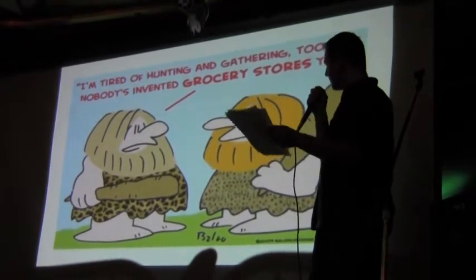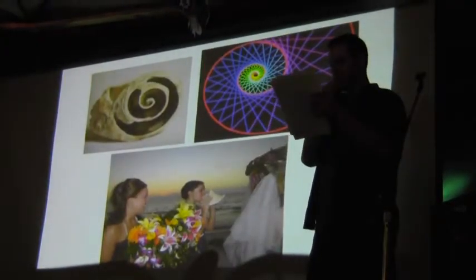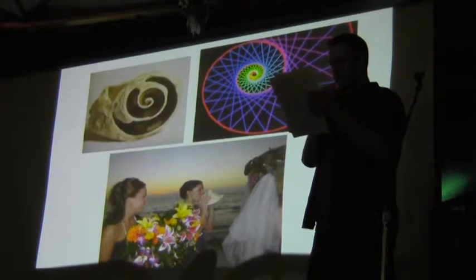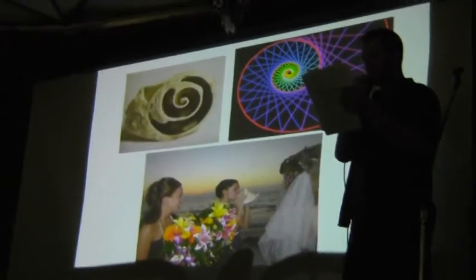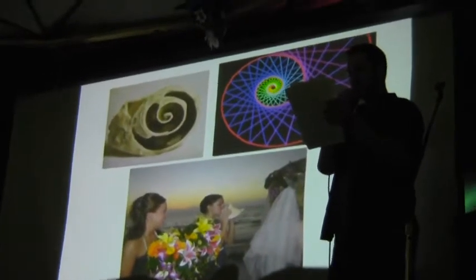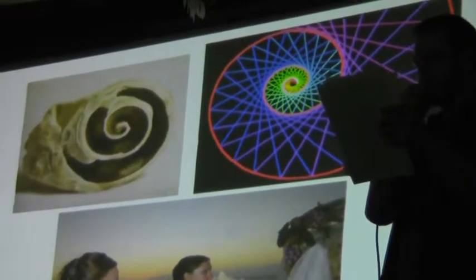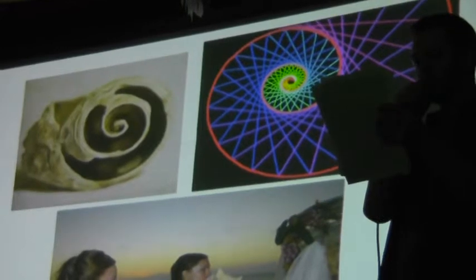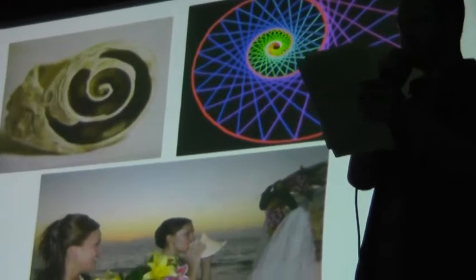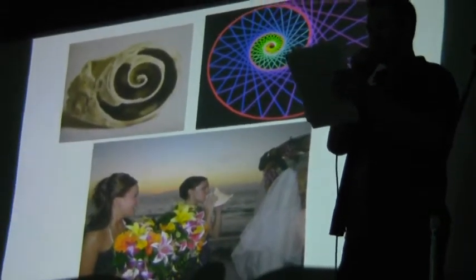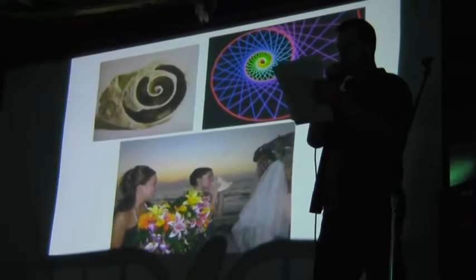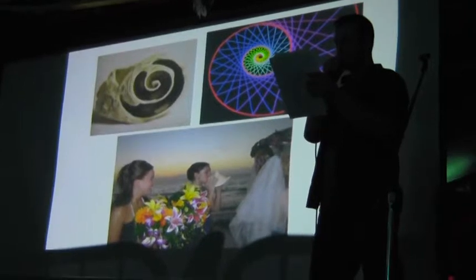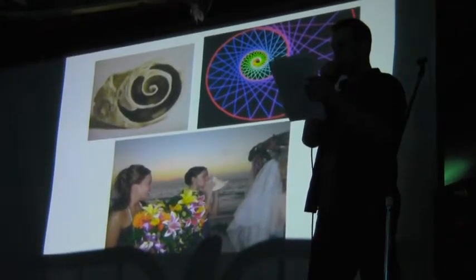For example, the conch shell. Its structure has been used to design a more efficient marine propeller. The conch shell has a structure within it called a Fibonacci spiral and is the most efficient shape we know of to move water and was created by nature.